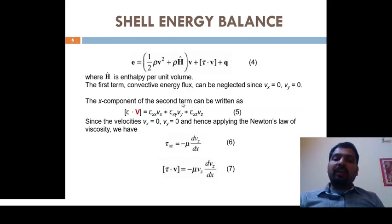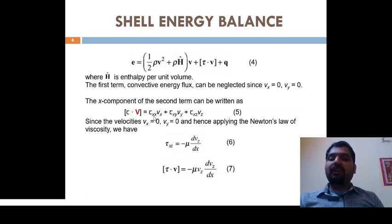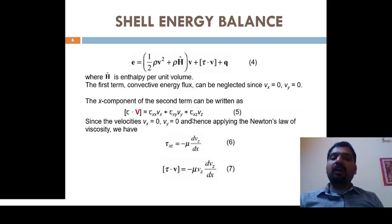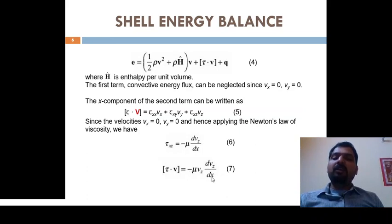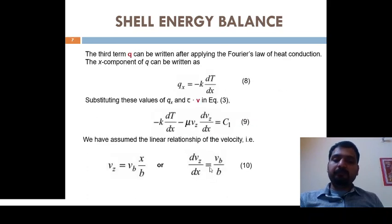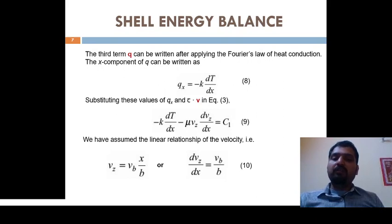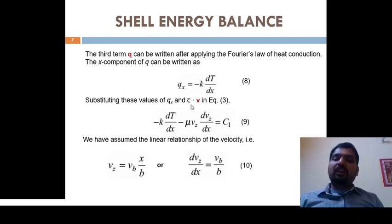For the second term, the x-component of τ·v is written as: τxx·vx + τxy·vy + τxz·vz. Since the x and y velocity components are zero, the remaining term is τxz·vz. By Newton's law of viscosity, the shear stress is τxz = −μ(dvz/dx), so τ·v = −μ(dvz/dx)·vz. For the third term, the heat flux by Fourier's law gives qx = −k(dT/dx).